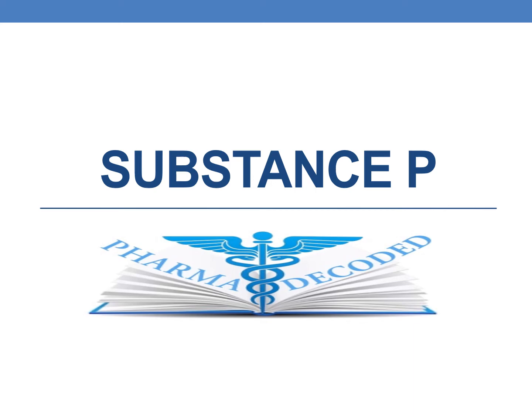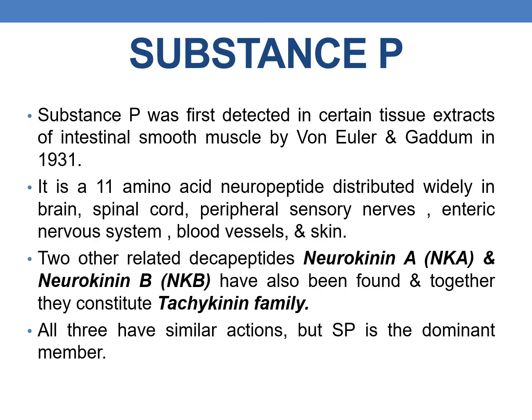Hello everyone. Let us discuss about Substance P. Substance P was first detected in certain tissue extracts of intestinal smooth muscle by von Euler and Gundam in 1931.